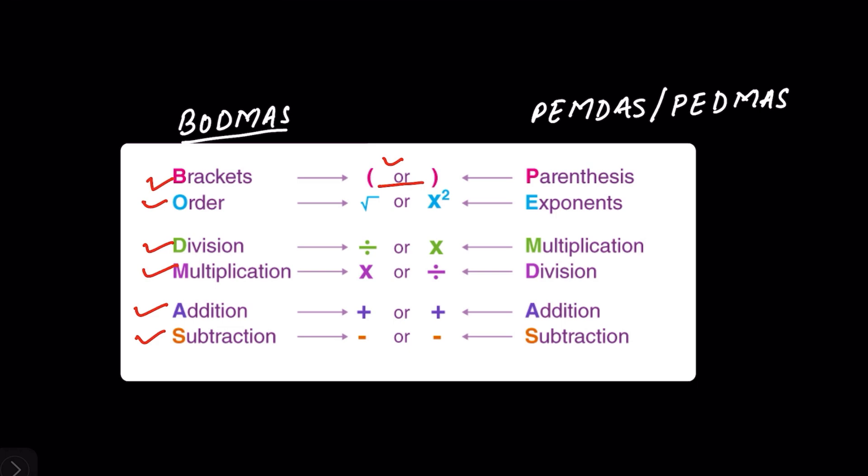First you solve the brackets or parenthesis, then exponents. In PEMDAS or PEDMAS, multiplication and division are grouped together. So when there is an operation where both multiplication and division are in the same line, then we have to follow the rule of left to right.